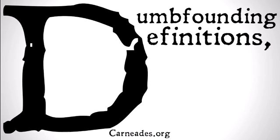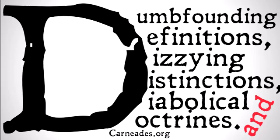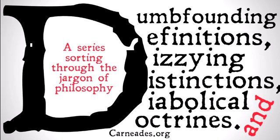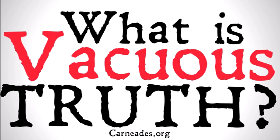Welcome back to carnadies.org. Today we're going to be continuing with our series, Dumbfounding Definitions, Dizzying Distinctions, and Diabolical Doctrines — a series sorting through some of the jargon of philosophy. In this video, we're going to be looking at the question: what is vacuous truth, or what makes something vacuously true?